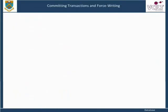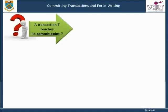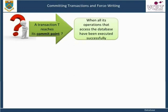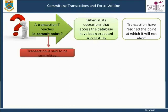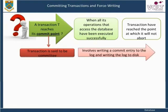Committing transactions and force writing: a transaction T reaches its commit point when all its operations that access the database have been executed successfully — that is, the transaction has reached a point at which it will not abort or terminate without completing. Beyond the commit point, the transaction is said to be committed and its effect is assumed to be permanently recorded in the database. Commitment always involves writing a commit entry to the log and writing the log to disk.